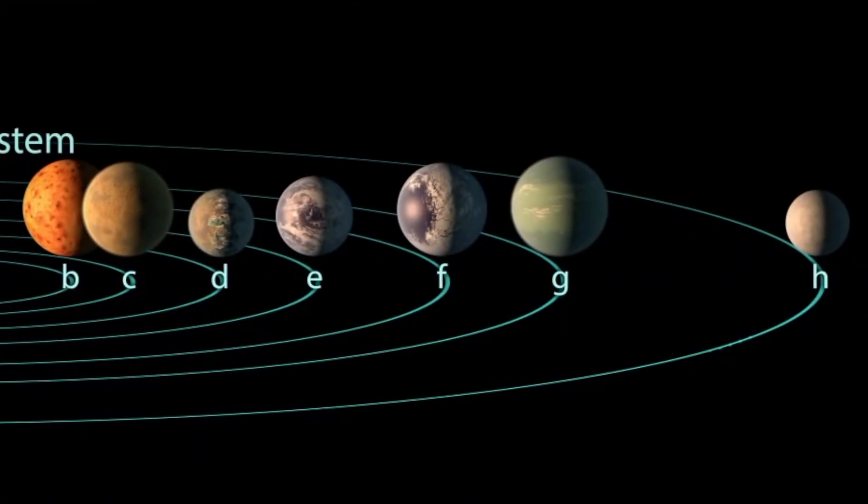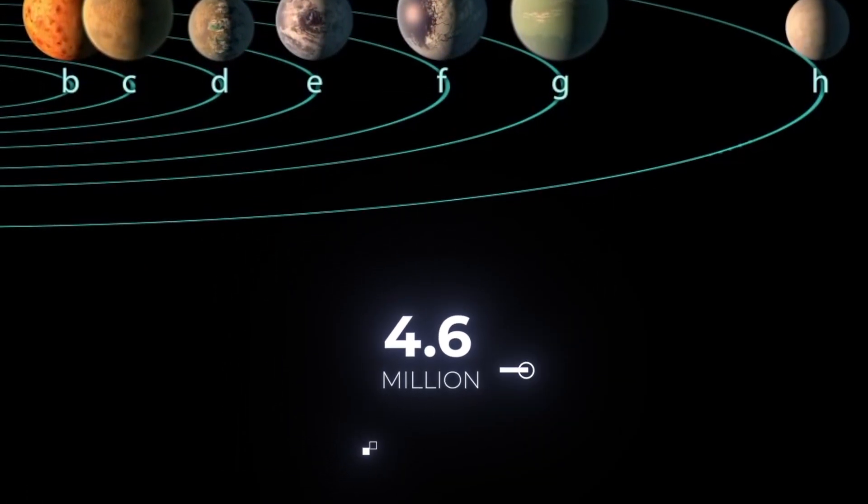The closest planet in the Trappist-1 system takes only one and a half days for its orbit. The innermost and outermost planets are separated by only 4.6 million miles.